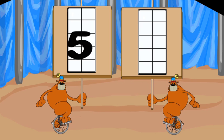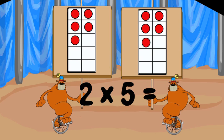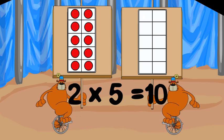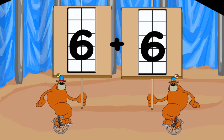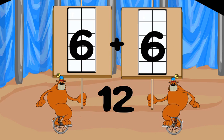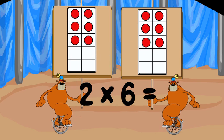2 groups of 5? 2 times 5 is 10. 2 groups of 6? 2 times 6 is 12.